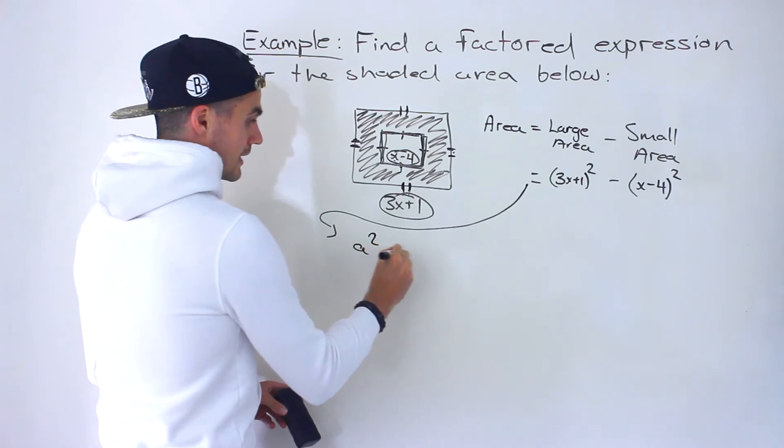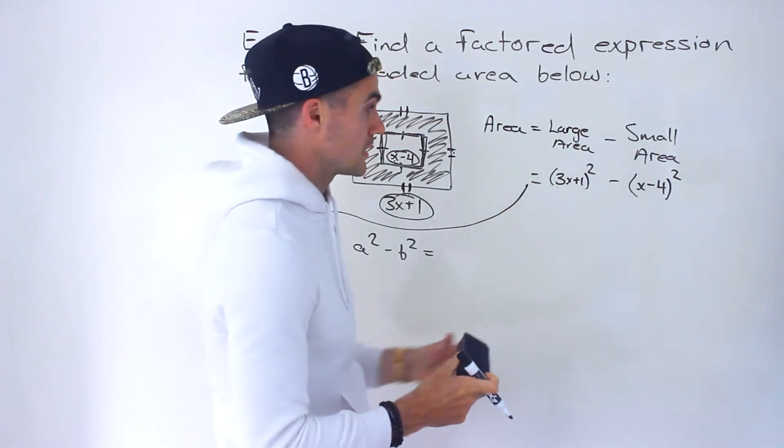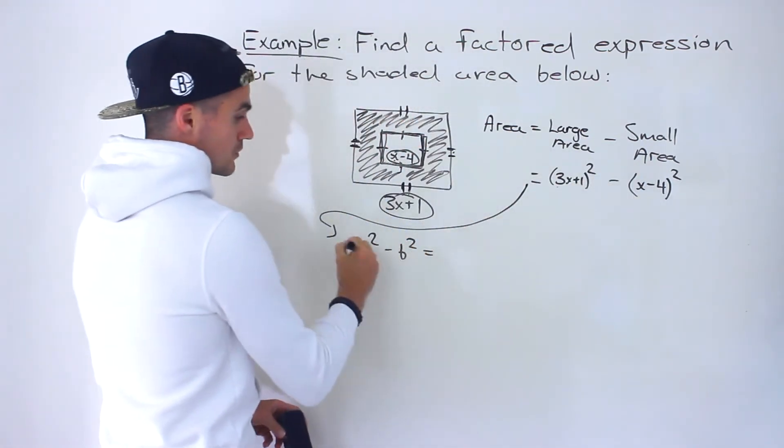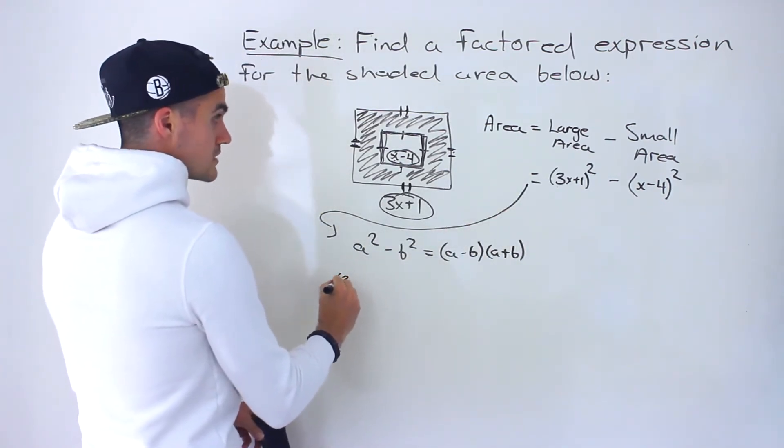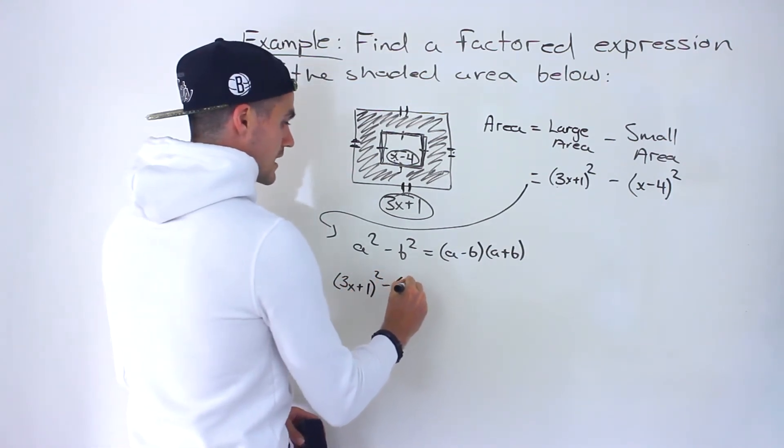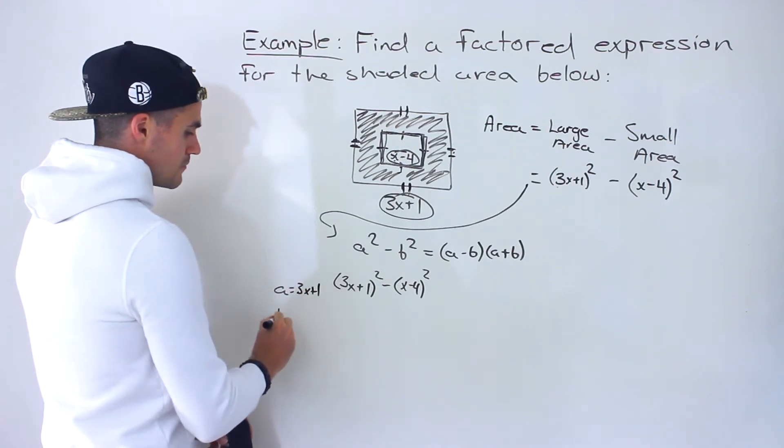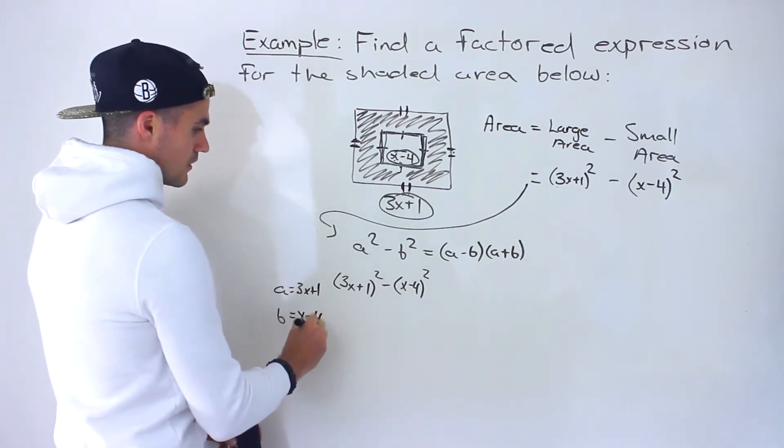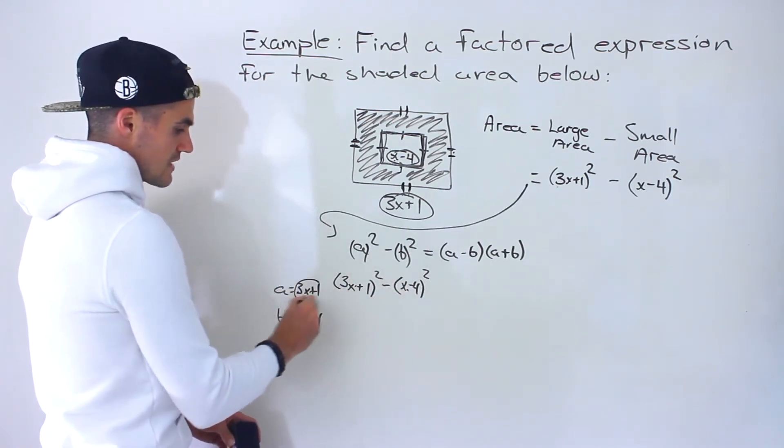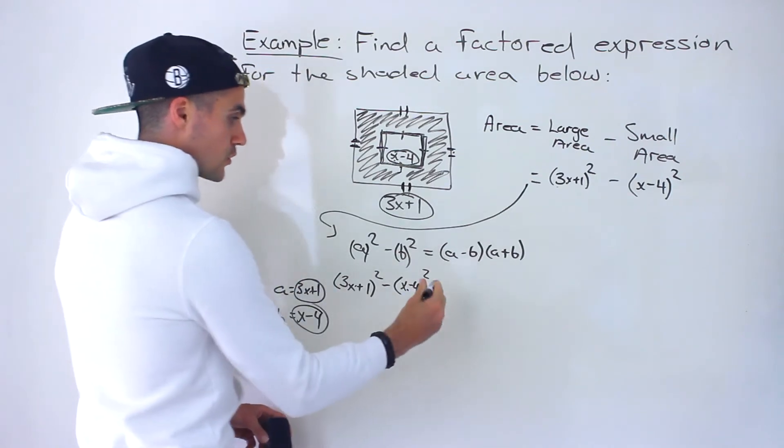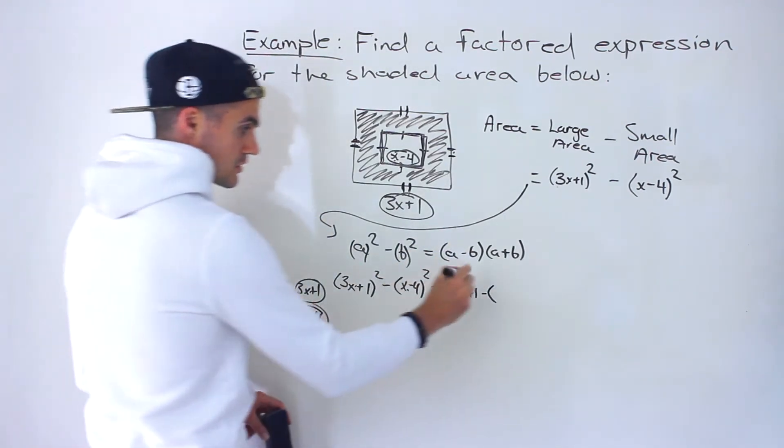This is method one, recognizing you're dealing with a difference of squares, but it's not just variables, it's actual full expressions that are being squared. In this case, it's like this a is the 3x plus 1, and the b value is x minus 4. If the a is 3x plus 1 and b is x minus 4, then you just have to put them in the formula. We would end up with (3x+1) minus the b value, but the b value is an expression, so you've got to put that in brackets.